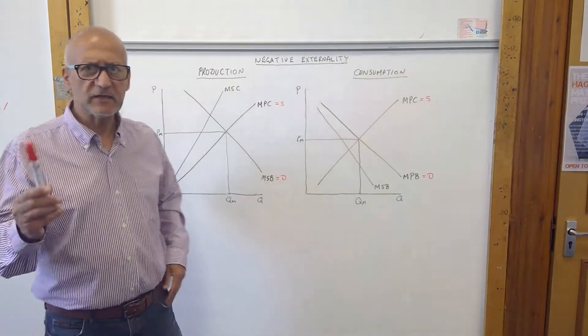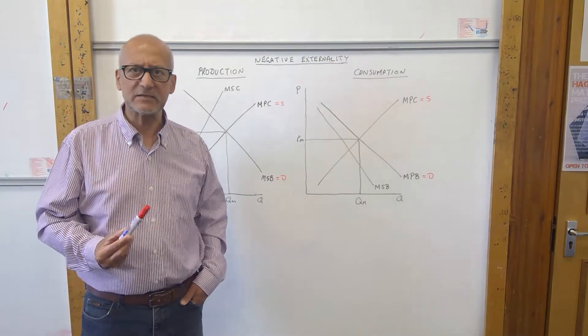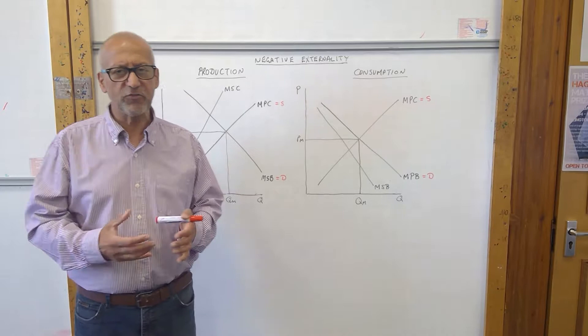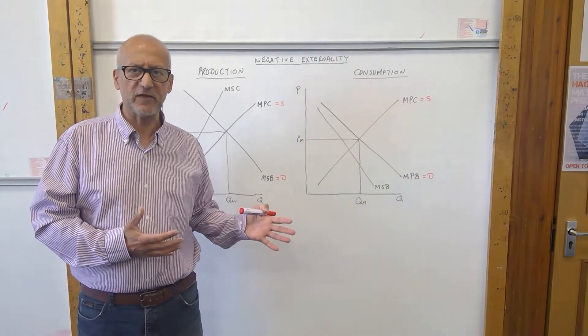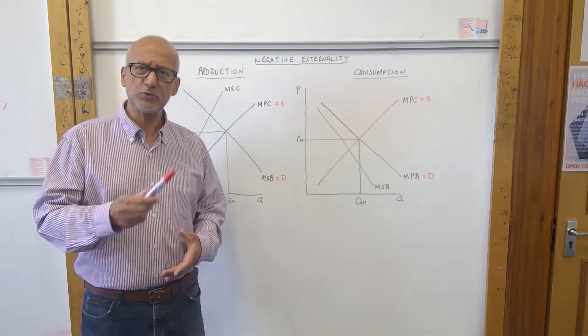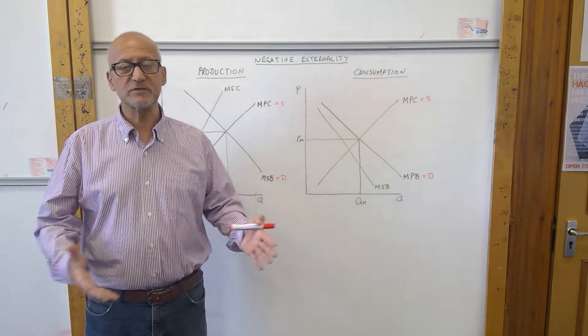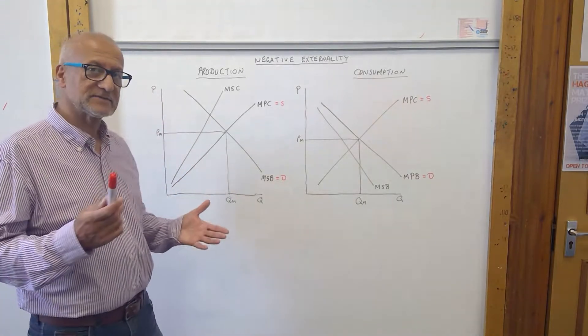In that last video what we looked at was how to depict externalities. Externalities are third-party consequences, spillover effects of a transaction. So when producers produce too much, sometimes they produce more than society wants. That creates an externality.